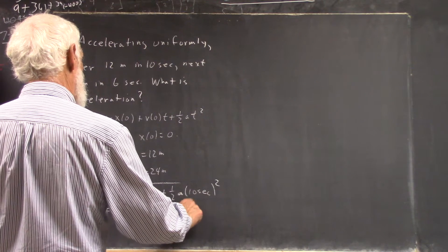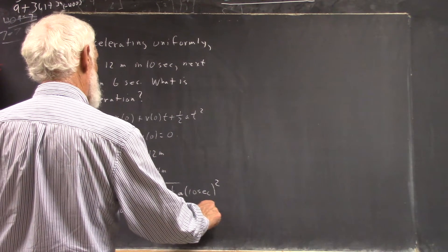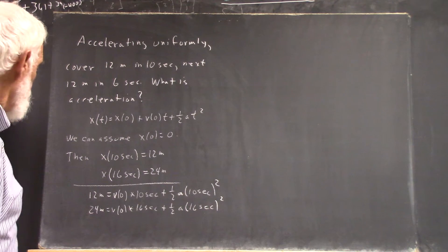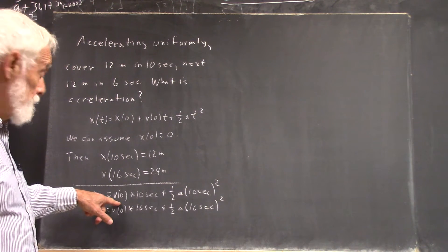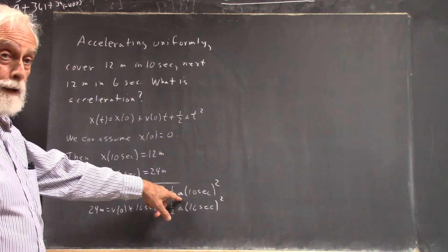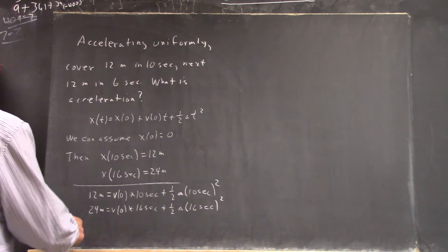So, once more, we have two simultaneous equations, the unknown quantities, v(0) and a. So, we just solve them.